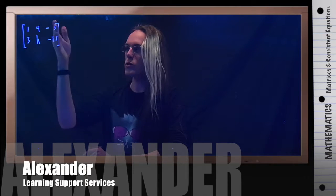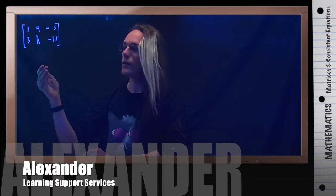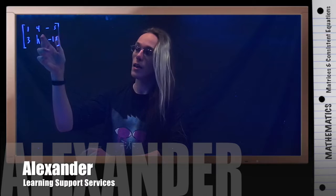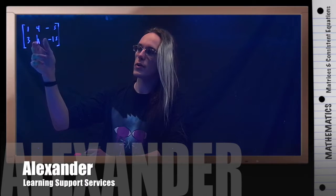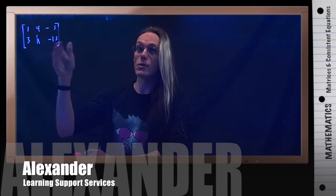Well, remember that if we assume this is an augmented matrix, then that means that the top row here represents 1x1 plus 4x2 equals negative 5, and this bottom row is 3x1 plus hx2 equals negative 15.